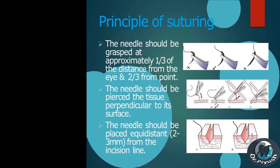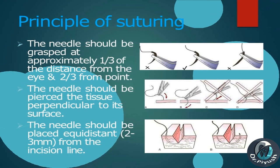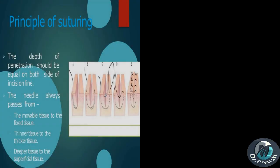Principles of suturing: The needle should be grasped at approximately one-third of the distance from the eye (two-thirds from the point). The needle should pierce the tissue perpendicular to its surface. The needle should be placed equidistant — 2–3 mm from the incision line. The depth of penetration should be equal on both sides of the incision line.